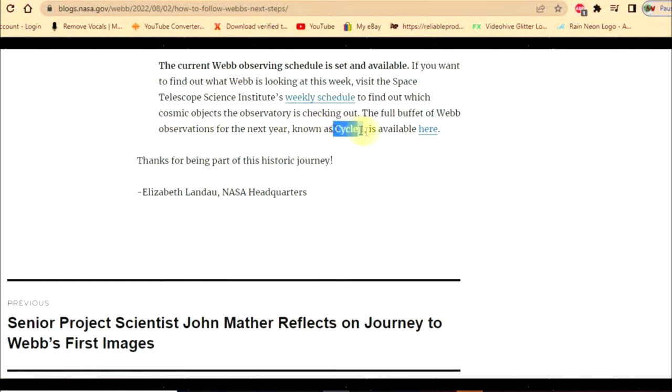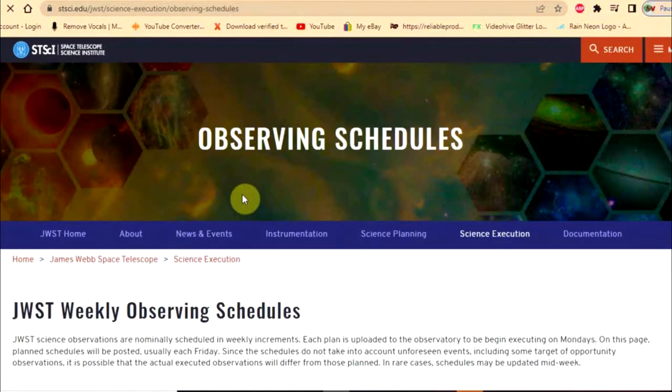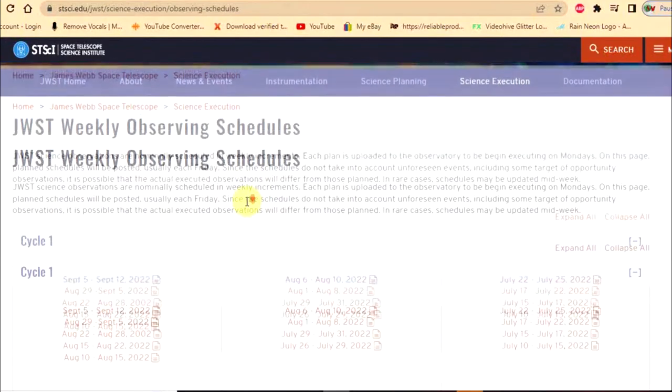The full buffet of Webb observations for next year is known as Cycle 1. During its first cycle, it's going to put those capabilities to the test.